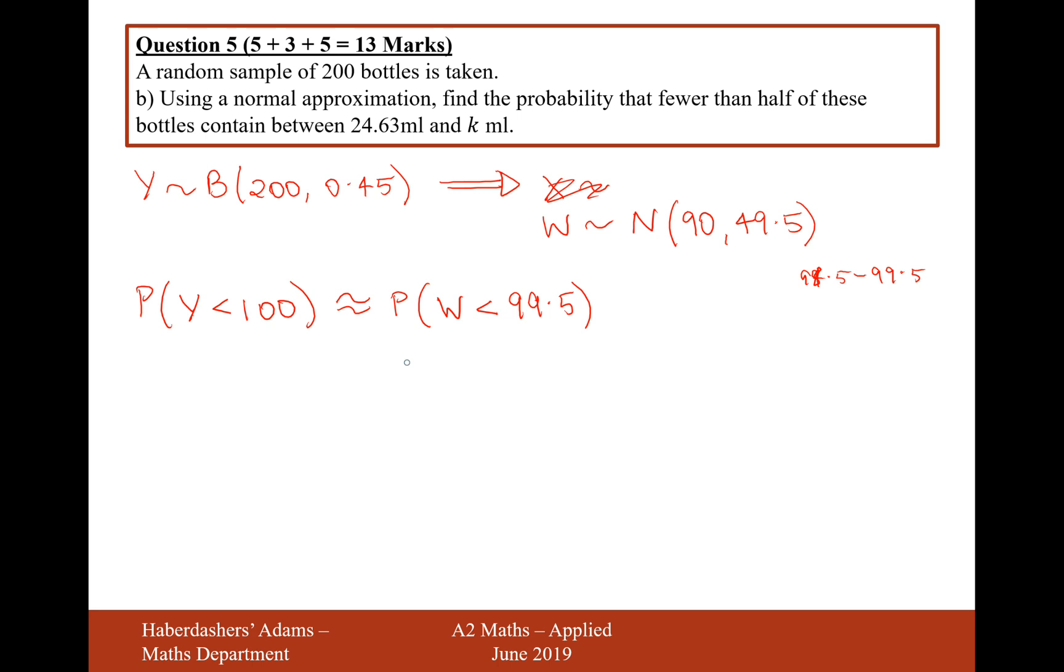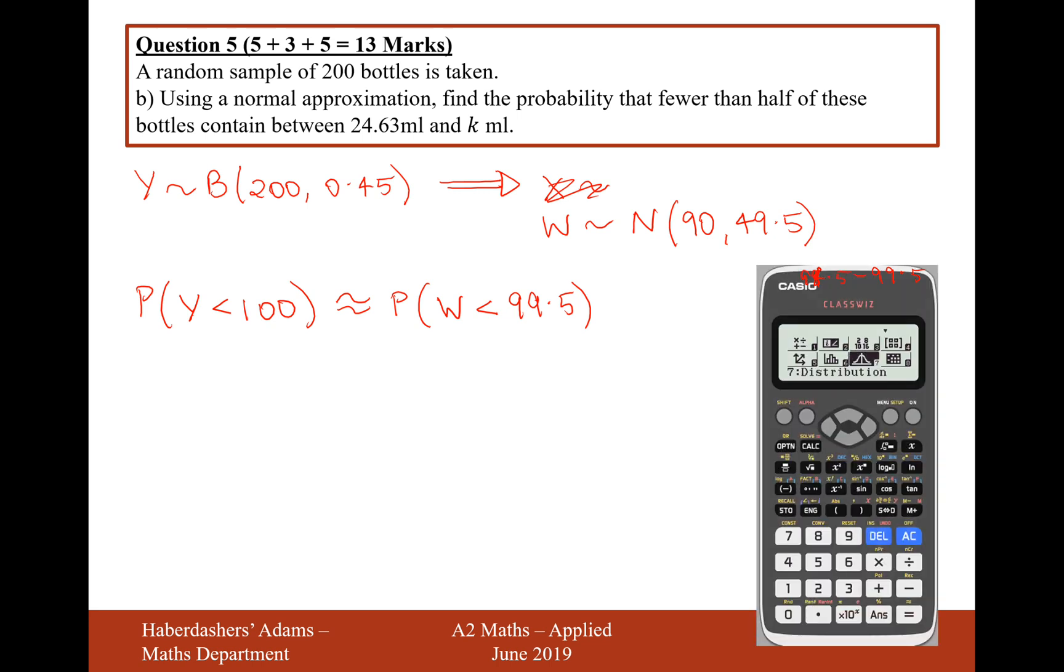Okay, so let's now grab our calculator and we need to now work this out. So we'll go into our calculator mode 7. We'll type in... it's the normal CD mode, normal CD. We don't really want a lower bound, so I'm going to type in my lower bound as minus 999. The upper bound is going to be 99.5. The standard deviation is the square root of 49.5, because 49.5 is what we calculated as the variance, and the mean is 90. Now when you've typed in the square root of 49.5, it will appear as a calculated value, and that's fine. And now we'll press enter, and we're going to get an answer of 0.9115. So there we are. So that's our answer to part B.